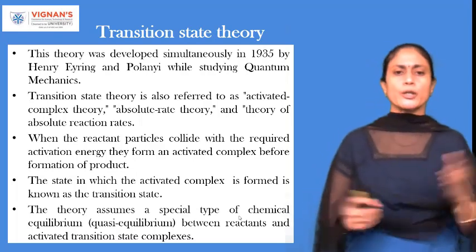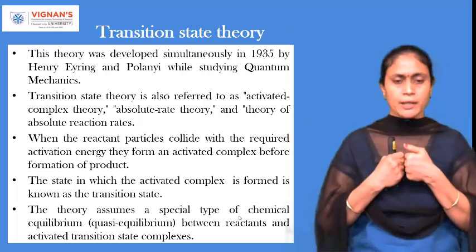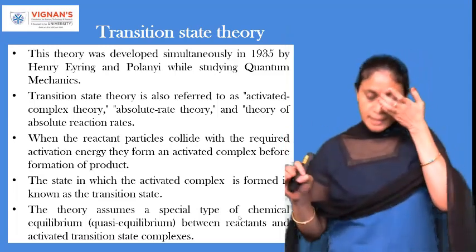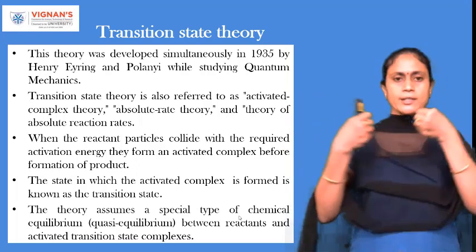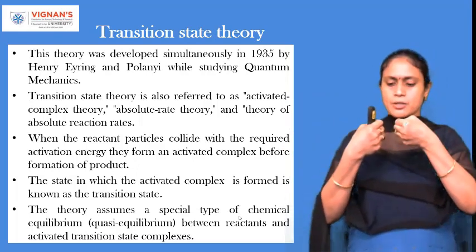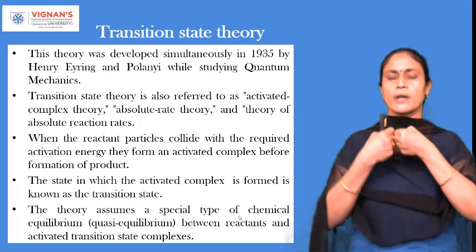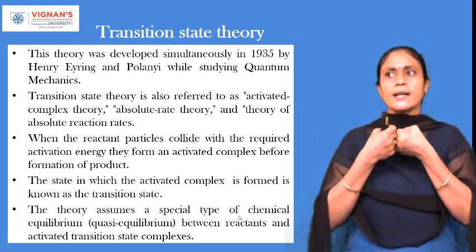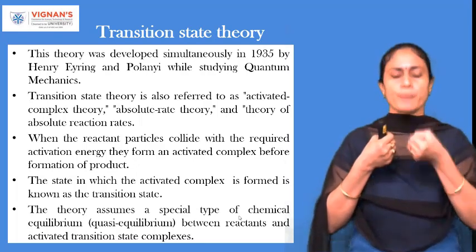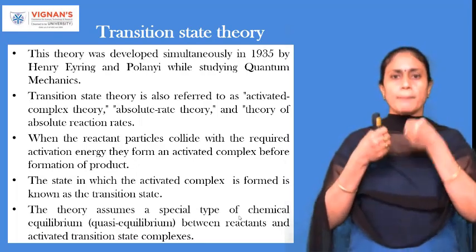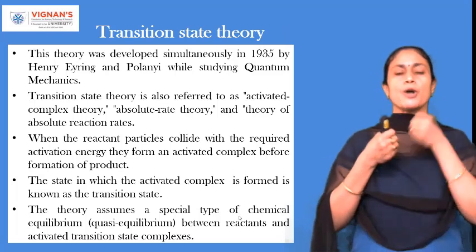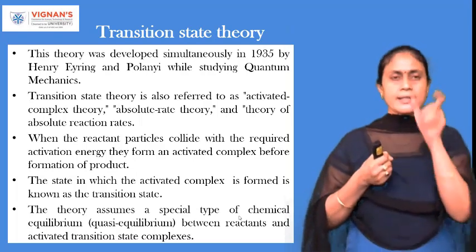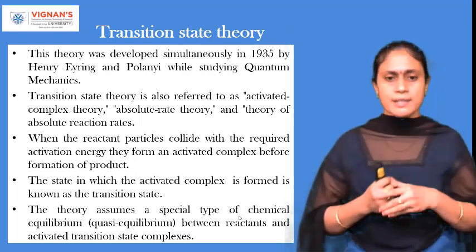When the reacting molecules collide with the required amount of activation energy, they form an activated complex before the formation of a product. Two reactants come together and, before the product is formed, there is an intermediate stage known as the transition state. This activated complex is formed in this transition state.